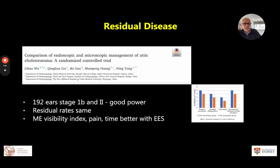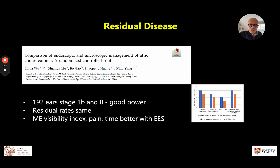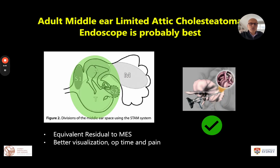Finally, among the recent randomized trials, a well-powered study from China looked at 192 ears with stage 1b and 2 disease — limited mesotympanic and attic disease — and showed residual rates were equivalent between the two techniques. The authors concluded the endoscope is preferable because operative time is shorter, patients have less pain, and the middle ear visibility index was far superior with the endoscope. For adults with limited attic and mesotympanic disease, the endoscope is probably the best option: equivalent residual rates, better visualization, reduced operative time and pain, and likely avoiding an incision.